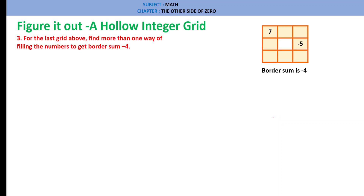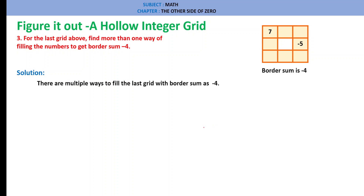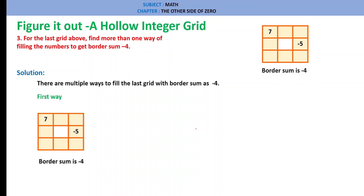Figure it out — Question 3: For the last grid above, find more than one way of filling the numbers to get a border sum of minus 4. There are multiple ways. First way: Top row: 7, minus 3, minus 8 = minus 4. Bottom row: minus 9, minus 4, plus 9 = minus 4. Left column: 7, minus 2, minus 9 = minus 4. Right column: minus 8, minus 5, plus 9 = minus 4.